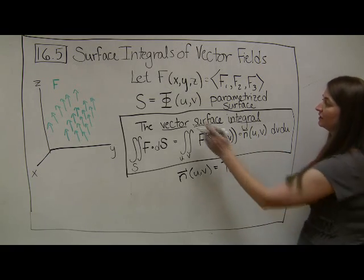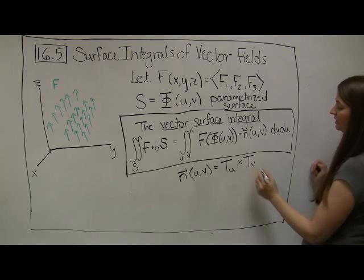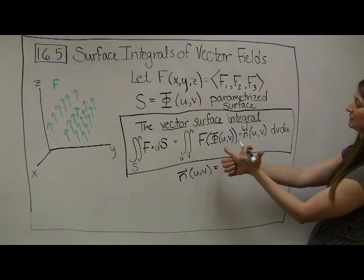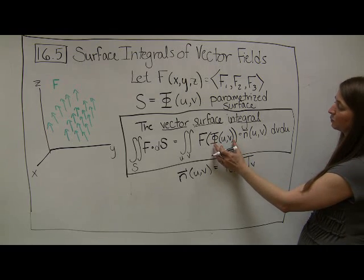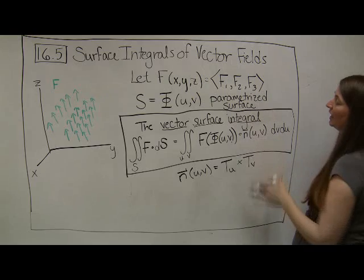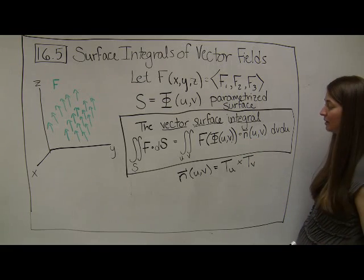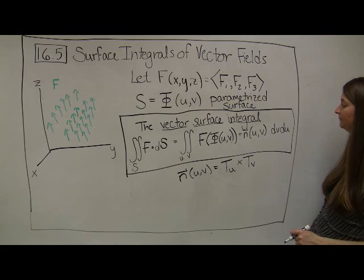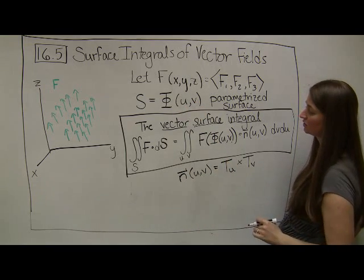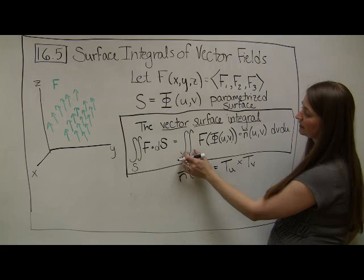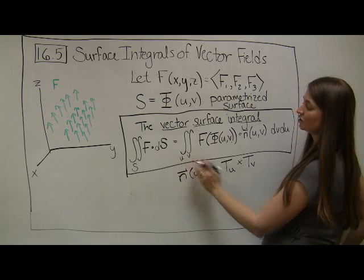The normal vector is our partial derivative of phi with respect to u, crossed with our partial derivative of phi with respect to v. That cross product gives us something perpendicular to our parametrized surface, which is our normal vector. When I take my phi function and plug it into my f function, I get out some vector, so it makes sense to dot that vector with the normal vector. When you take the dot product of two vectors, you end up with a scalar that you can integrate over. The bounds are in terms of u and v, and can be constants or a type 1 or type 2 region.